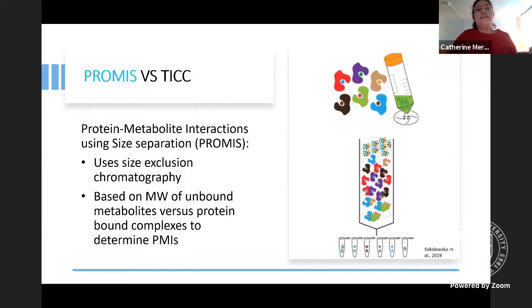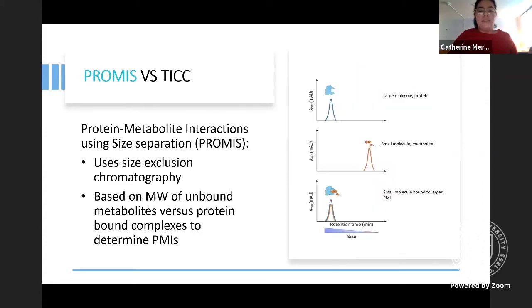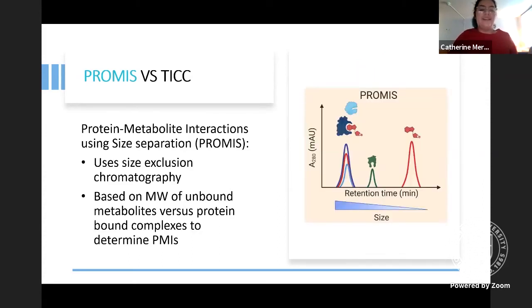However, once again, limitations to this approach is that there will be many coincidental co-elutions because molecules can have similar characteristics to one another. We see that although it separates a smaller molecule earlier or later on, proteins that have a similar size, such as in larger fractions, may co-elute with one another.